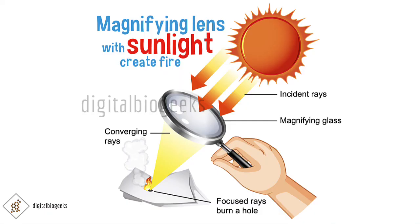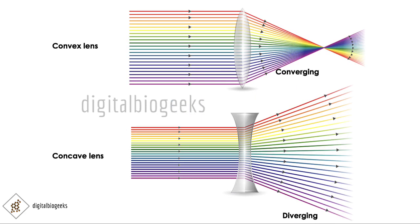Let's do an activity. Take a convex lens and put it in the path of sunlight. Place a paper under the lens and adjust the distance between the lens and the paper until we get a bright spot on the paper. Hold the lens and paper in this position for a few minutes and we can see the paper starting to burn. This is because the convex lens concentrates and converges the light at a point, so heat energy accumulates at a specific point — causing the paper to burn. Hence the convex lens is also called a converging lens.